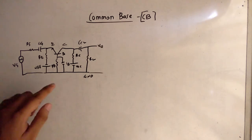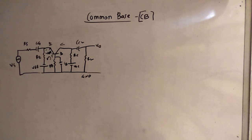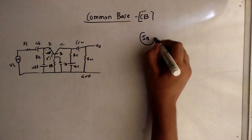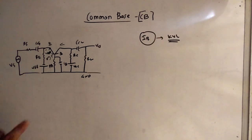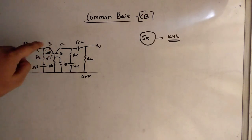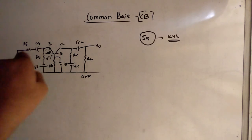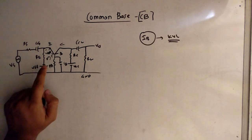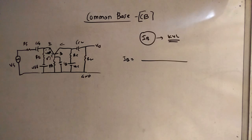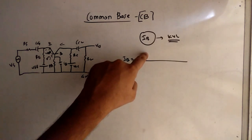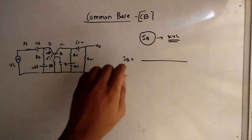Now we have to use KVL to find the base current IB. We apply KVL in this loop, with current flowing in the anti-clockwise direction. There is a trick: in the numerator we write the voltages, and in the denominator we write the resistance, because V divided by R equals I.